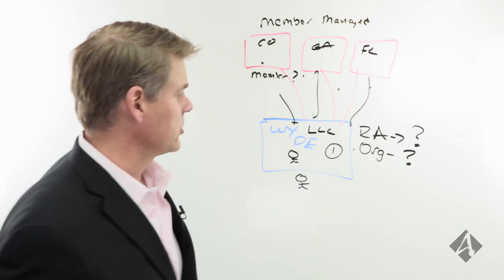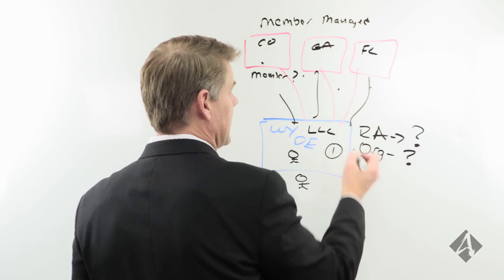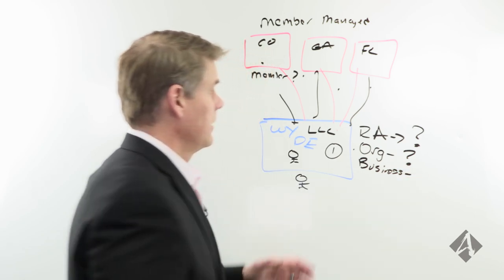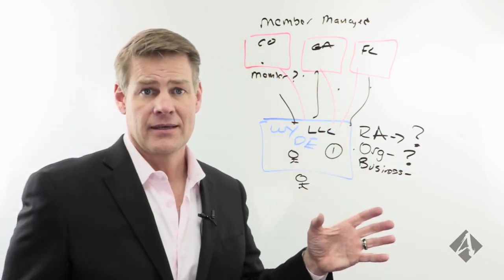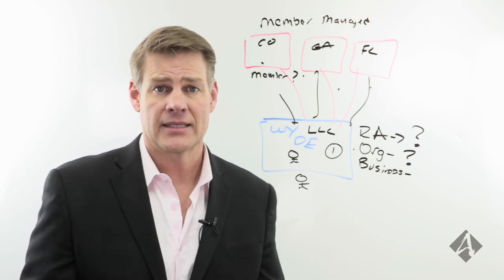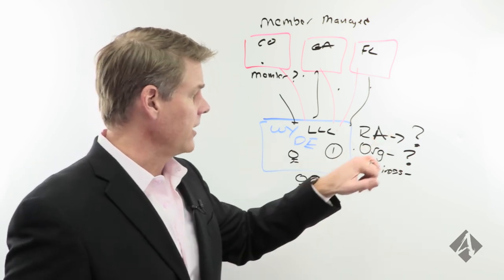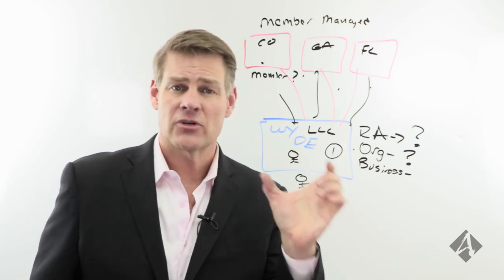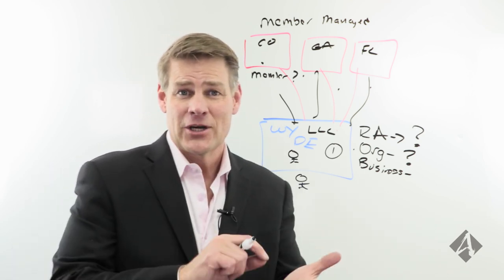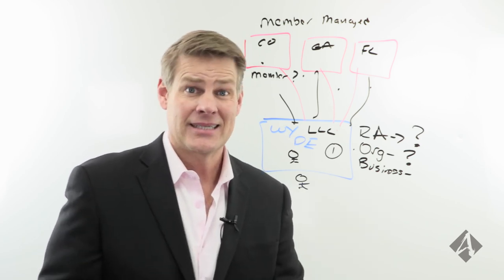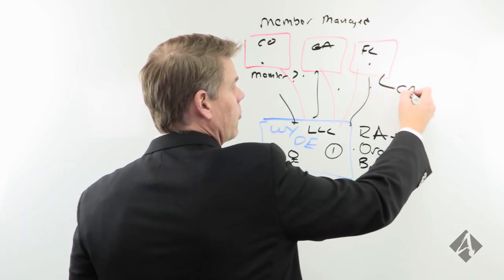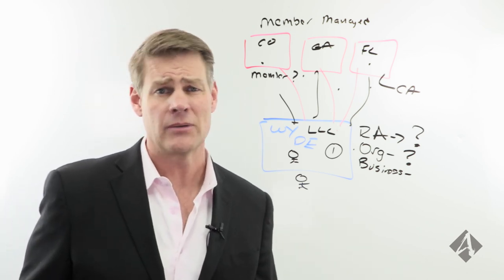And the third way in which they're going to track you back is through the business address. So typically you're going to be asked for a business address when you set up an entity. Now, that business address, if you don't have a PO box or an address that is not associated with you, if you have to use your home address or something like that, well, you could get the RA right, you could get the organizer right, but then on that business address line, you tell the person who's incorporating it for you, say you're using Legal Zoom to set this stuff up, you're going to tell them, hey, here's my address, because they need that. Now, you set up a Florida LLC and you give it a California business address, which happens to be your home address. Could you do that? Absolutely. People do it all the time.